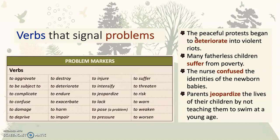Here are some examples. The peaceful protests began to deteriorate into violent riots. Many fatherless children suffer from poverty. The nurse confused the identities of the newborn babies. Parents jeopardize the lives of their children by not teaching them to swim at a young age.